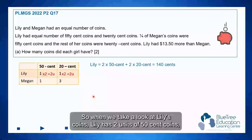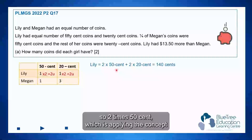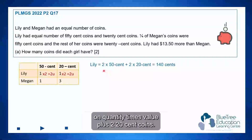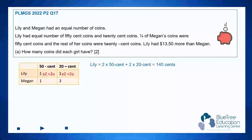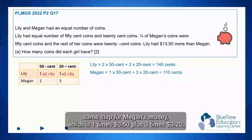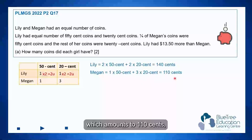When we take a look at Lily's coins, Lily has two units of 50 cent coins, so 2 times 50 — applying the concept of quantity times value — plus two 20 cent coins, so 2 times 20, and this total amount is 140 cents. We repeat the same step for Megan's money, which is 1 times 50 cents plus 3 times 20 cents, which amounts to 110 cents.